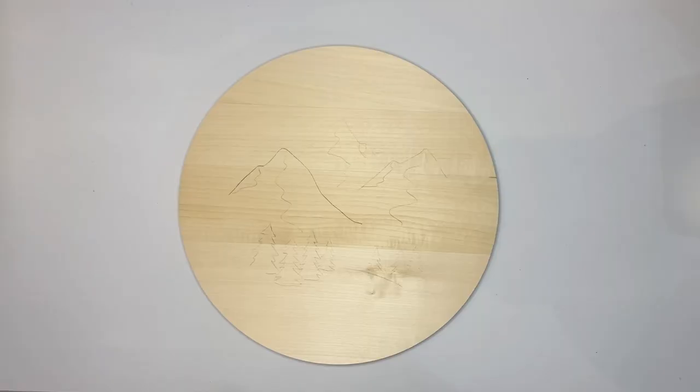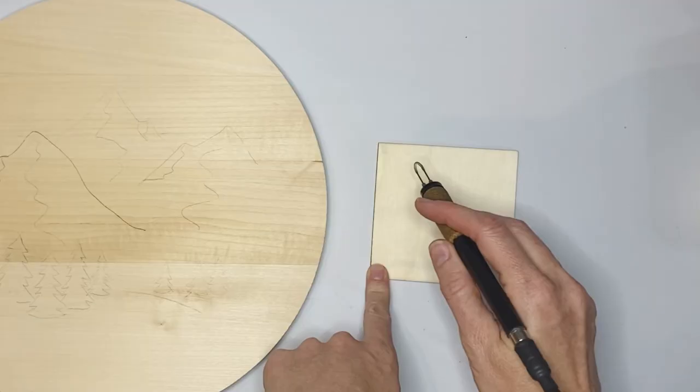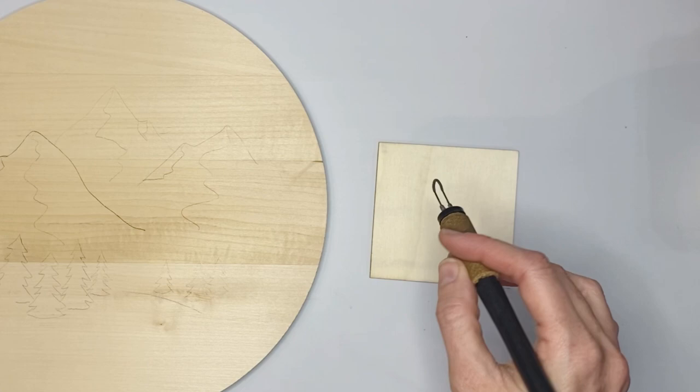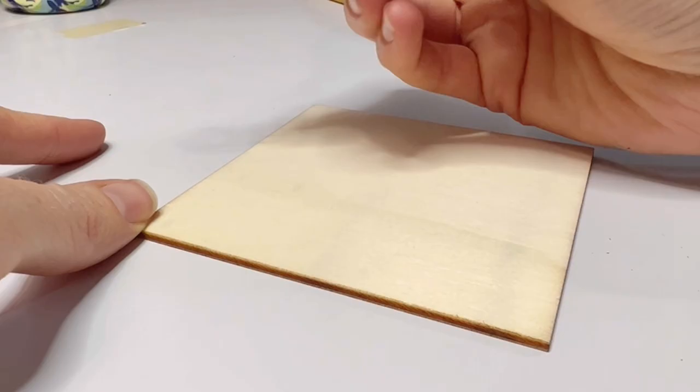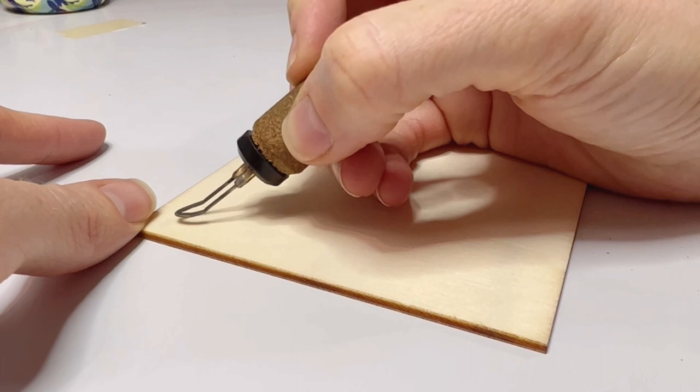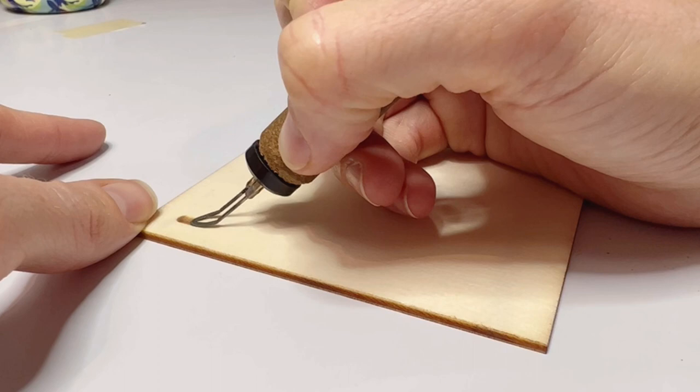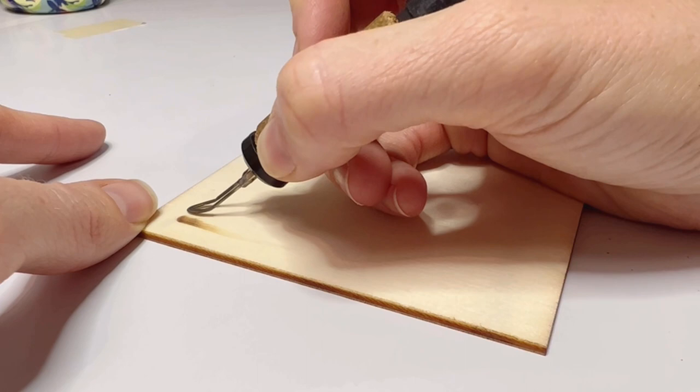Now before you burn your actual piece, make sure you do some practice and make sure that you are getting the kind of shading that you want. And you'll want to make sure that it's at a heat level that will burn the wood nice and dark and then also burn it lighter. So that for me was a little bit slow, but if you're just starting out it's best to go light, low, and slow.